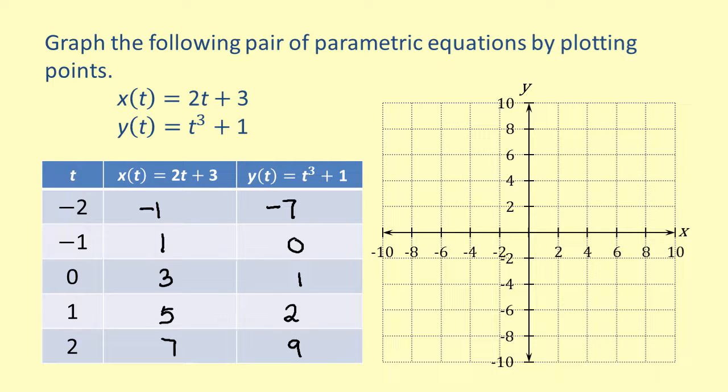We now have five ordered pairs to plot. Our first point is negative 1, negative 7, so we plot that point on the graph. Our second point is 1, 0. Next, we have 3, 1. Then, 5, 2, and 7, 9.